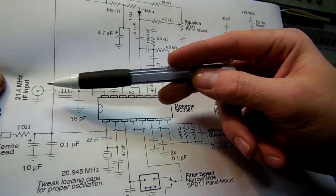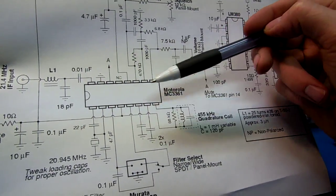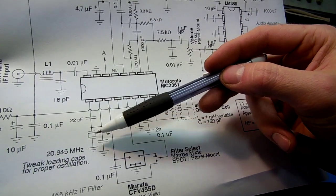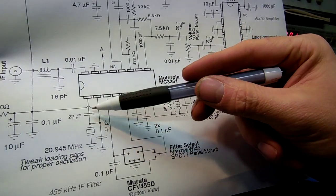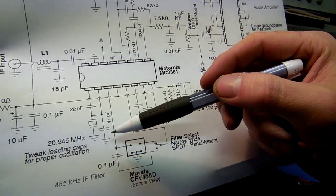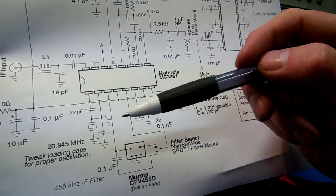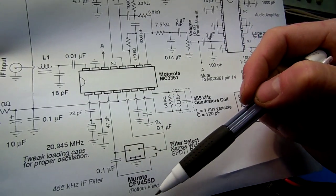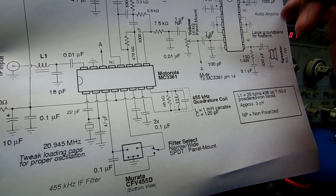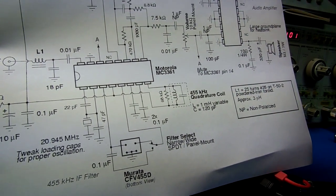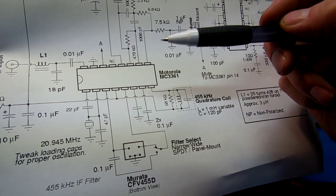To convert the 21.4 megahertz IF input down to 455 kilohertz which this chip operates, we need to have an external 20.945 megahertz crystal and the supporting loading capacitors. These crystals are hard to find but since 21.4 megahertz is a common IF in two-way radios, if you search your local ham fest or buy a bunch of different radios you're bound to find one eventually. That's kind of what I did. You might have to buy five different radios before you find one but you will find one eventually.